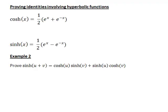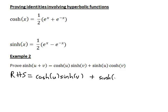Let's look at a second example which requires slightly more algebraic manipulation: proving that sinh of u plus v is equal to cosh u times sinh v plus sinh u times cosh v. The right hand side looks more complicated, so let's start there. Writing it out: cosh u sinh v plus sinh u cosh v.